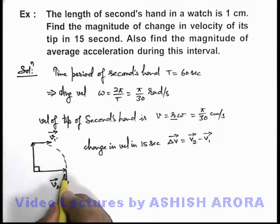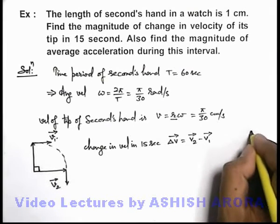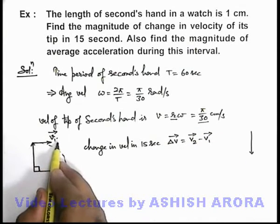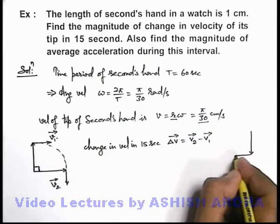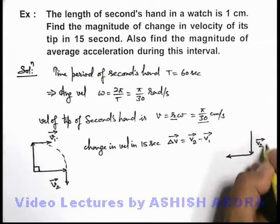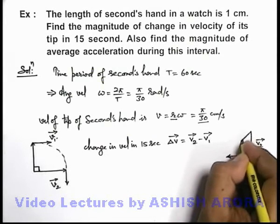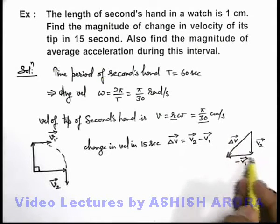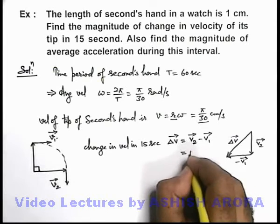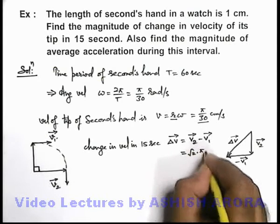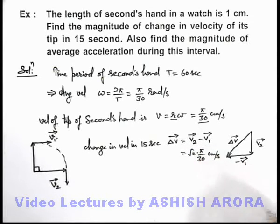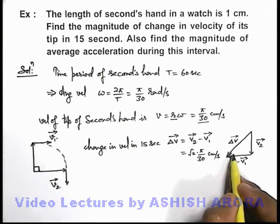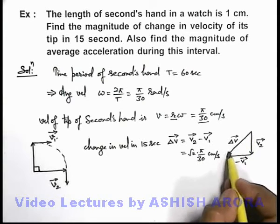If we just draw the velocity triangle, v2 vector is in downward direction. Its magnitude remains same, this is v2 vector. This is minus v1 vector. So this will be the change in velocity, it is delta v. As both of these vectors are same in magnitude, its magnitude can be written as root 2 into π by 30 centimeters per second, because this will be root 2 v by Pythagoras we can directly calculate it. Now the direction will be this direction.